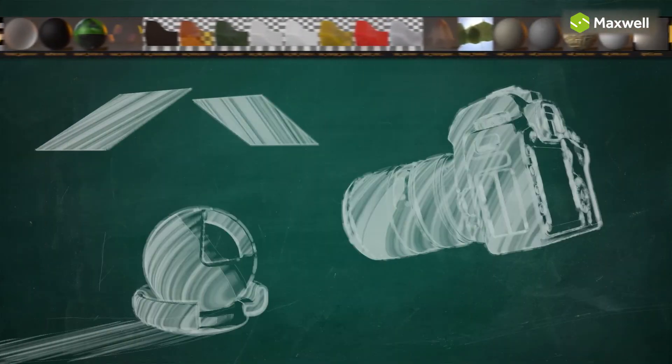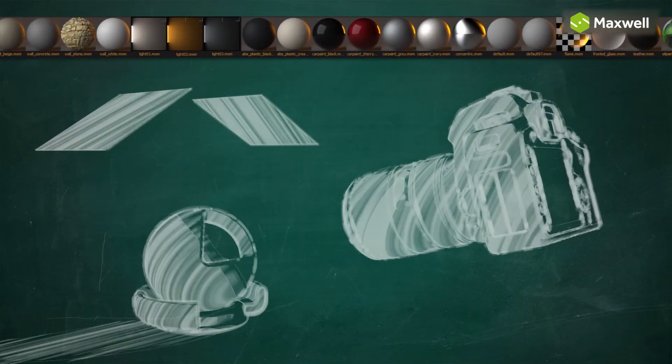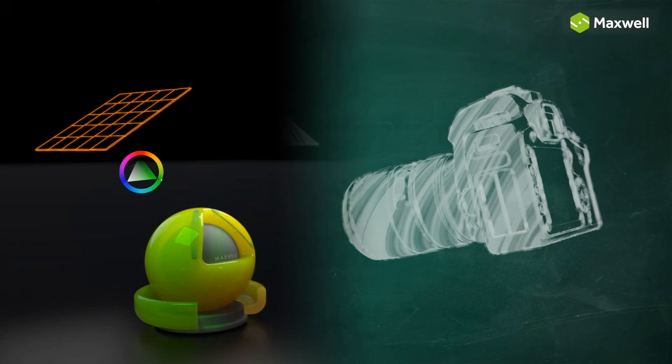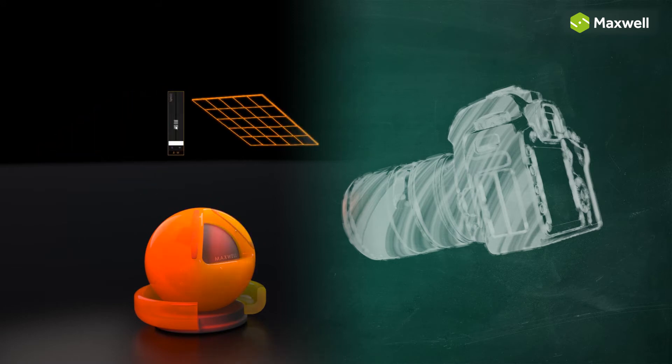Lights in Maxwell Render are created by applying an emitter material to an object. You can adjust the color and intensity of the emitter using everyday terms like watts or efficacy, or you can look into more advanced definitions using lumens,